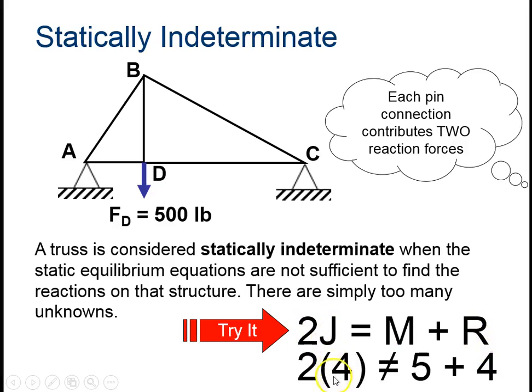So the number of joints that are here, the joints are the corners, so 1, 2, 3, 4. There's four joints. The members are each of the lines: 1, 2, 3, 4, 5. There's five members. And the reaction forces, remember that a pinned joint has two reactions here and two here. So there's four reaction forces. Eight does not equal nine, so this is not statically determinate.